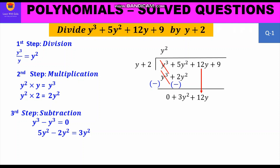We repeat the three steps with the new dividend. First, division: 3y² ÷ y = 3y — or think of it as: what multiplied by y gives 3y²? That gives 3y as the next quotient term, written on top next to y².